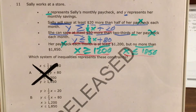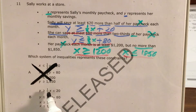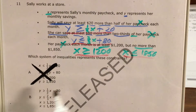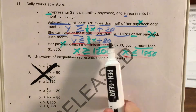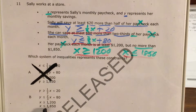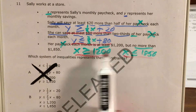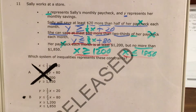Moving on to choice B: Y is greater than or equal to one-half X plus twenty — that's my first equation, that's good. Y is less than or equal to two-thirds X plus eighty — that's my second equation, still good. X is greater than or equal to twelve hundred. X is less than or equal to eighteen-fifty. I am really liking choice B so far, but I do want to knock out C and D just to be sure.